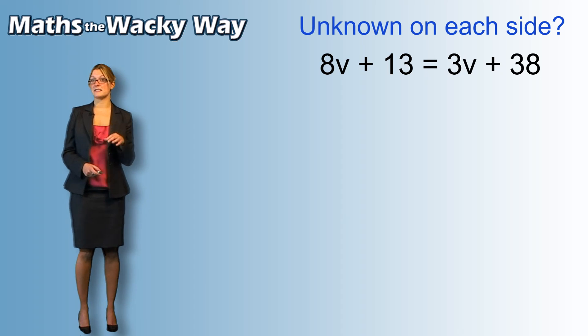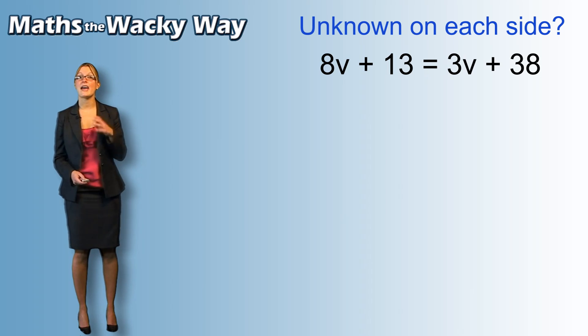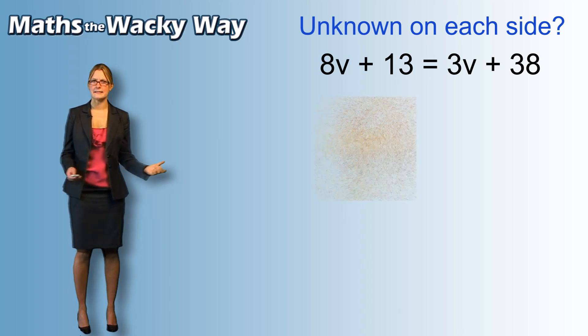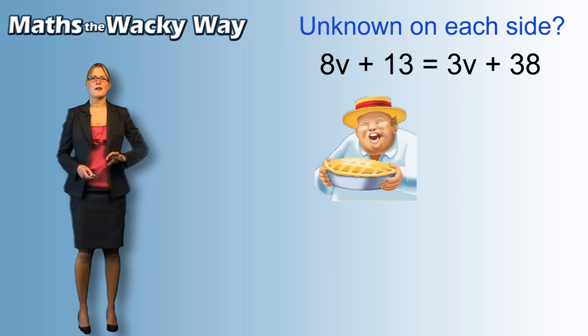Well, v is going to be our character still. So, v is the character that we care about but the number in front of the v is how many pies is eaten. Now, if we ask the question, who ate all the pies, that person is probably going to be the heaviest of the two.